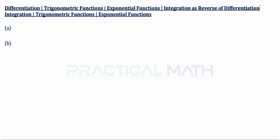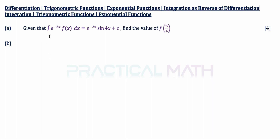In part A of this question, given that the integral of e to the power of negative 2x multiplied by f of x dx gives a result of e to the power of negative 2x sin 4x plus c, you are to find the value of f of π over 4. That is the 4-mark question.